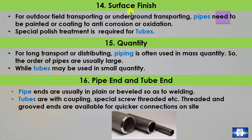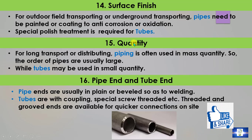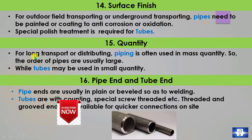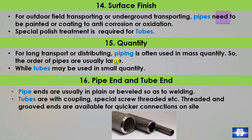Point 14: Surface finish. Pipes are normally used in outdoor field transporting or underground transporting, and need to be painted or coated for anti-corrosion or oxidation protection. For tubes, special surface treatment is required. Point 15: Quantity. The distributing and transporting system is large, so piping is often used in mass quantity and orders are usually large. Tubes are mainly used for special purposes, so they may be used in smaller quantities.